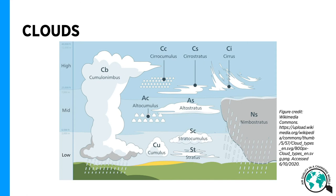Cumulonimbus clouds freeze from the top, leading to intense precipitation and thunder. Nimbostratus clouds are related to mid-latitude weather systems and continuous precipitation.